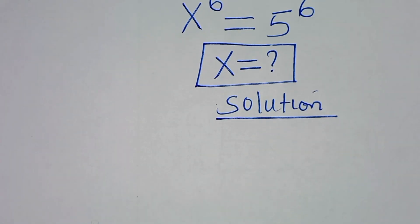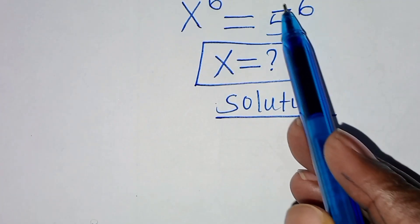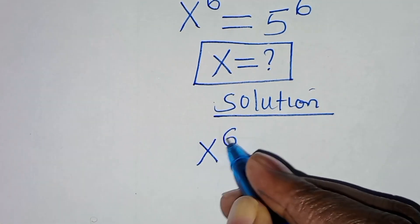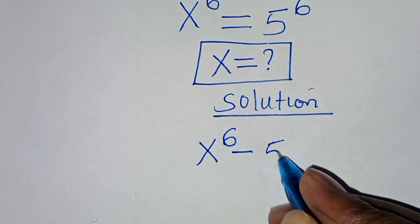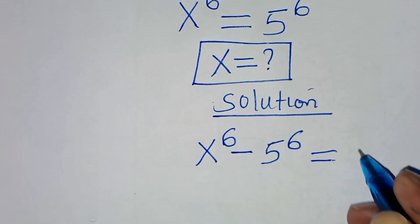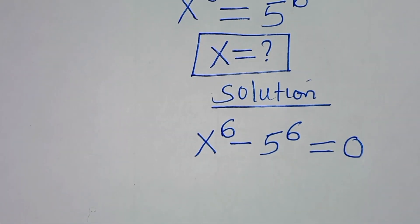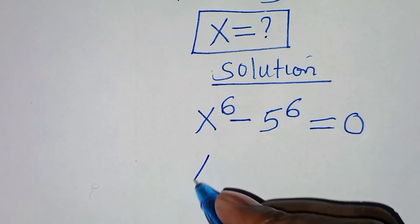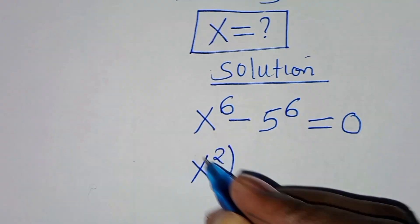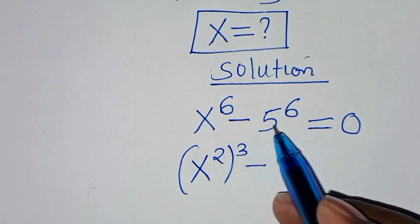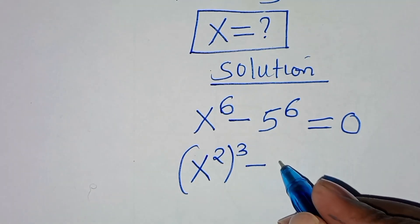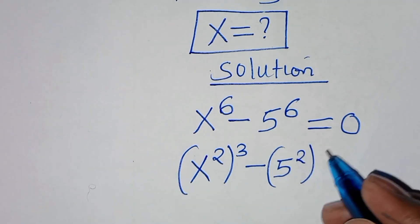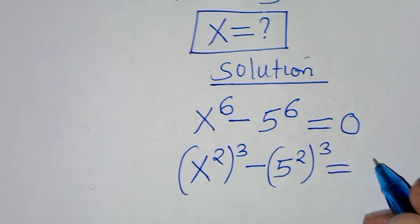The first thing is to take 5 to the power 6 on the left-hand side, so that we'll have x to the power 6 minus 5 to the power 6, this is equal to 0. We can express x to the power 6 as x squared, least to the power 3, minus 5 to the power 6, which we can express as 5 squared, least to the power 3. This is equal to 0.